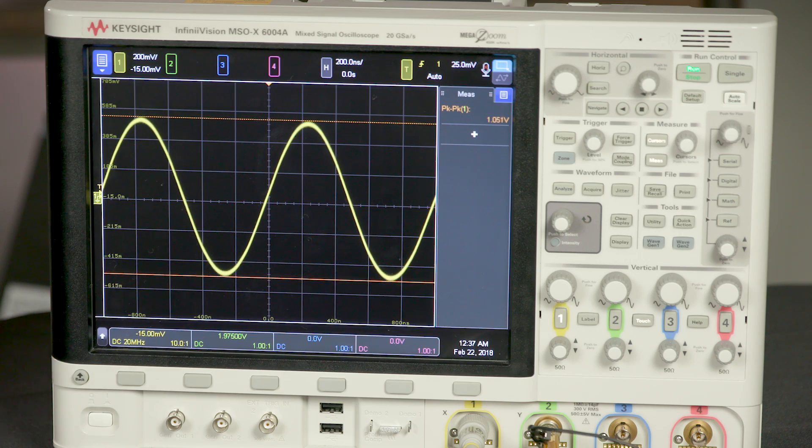As an example, let's say we're working with a 20 MHz probe. To start out, I'm measuring a 1 MHz signal with 1 V peak-to-peak that's coming from my waveform generator. The peak-to-peak measurement you see on screen is accurate at 1 V peak-to-peak, because we're using a probe that has plenty of bandwidth for this signal.